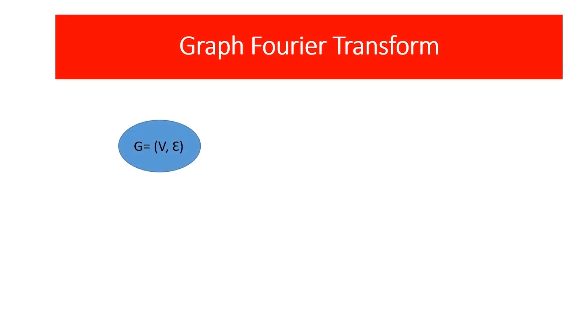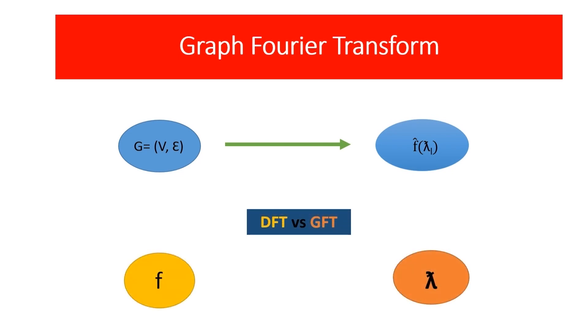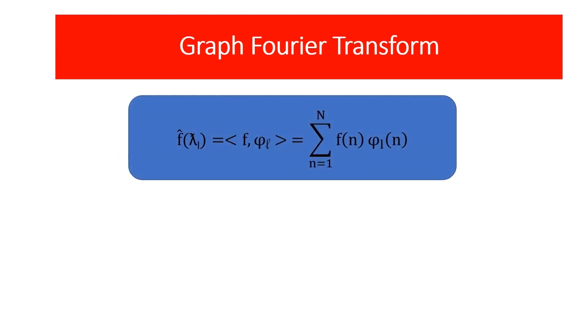Graph Fourier transform is a process which converts the signal of graph domain to signal of frequency domain. We already know that the role of frequency in DFT like that in GFT lambda plays the role of frequency. We already have a proven equation.